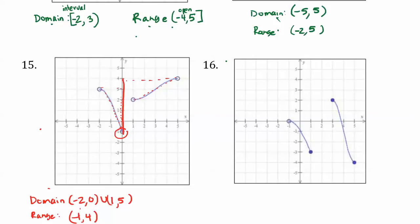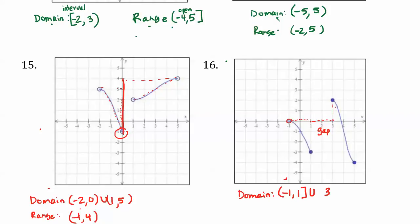Graph 16 also has two separate sections. For the domain, the leftmost section begins at negative 1 on the x-axis and stops at x equals 1. The point at negative 1 is open so we use parentheses, but the point at 1, negative 3 is closed so we use brackets. There's a gap between x equals 1 and x equals 3, so we do a union. The second interval picks up at x equals 3 and goes to x equals 5. Both endpoints are closed, locked-in points, so we use brackets around 3 and 5.